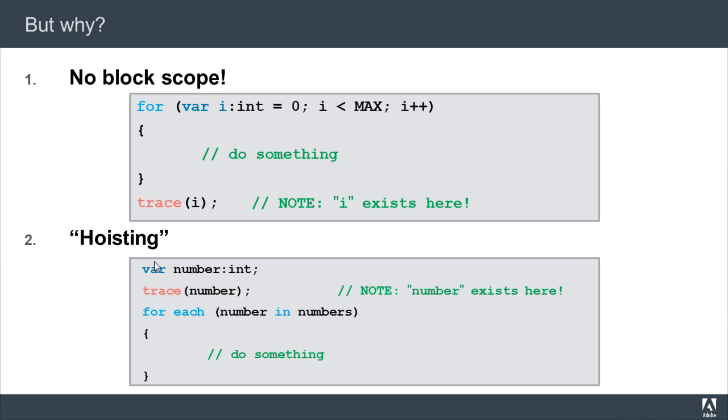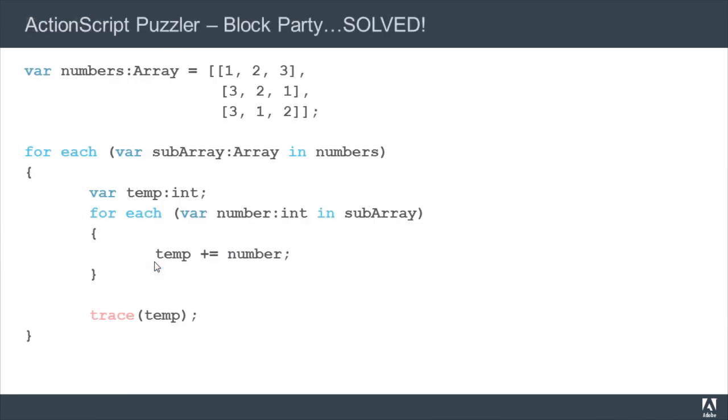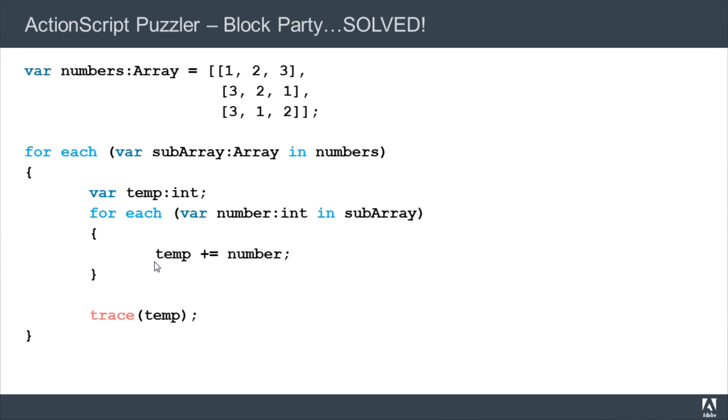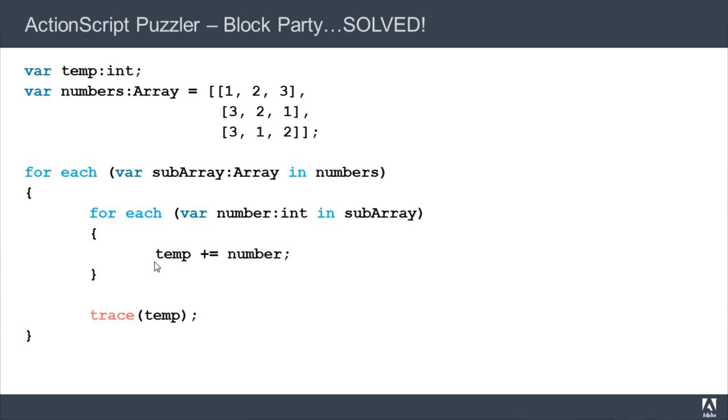Now going back to our puzzler code, if we apply this new logic, we can easily see where our errors are. Applying the logic of no block scope and using hoisting, our code actually looks like this to the compiler. Notice that the temp declaration moved from inside this for loop to the top of the function.